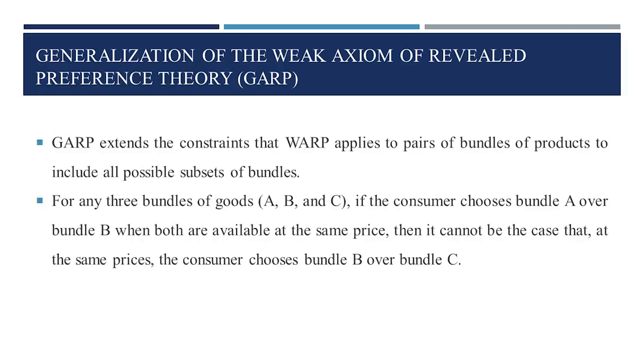There is one more axiom, that is GARP — the Generalised Axiom of Revealed Preference, which is a generalisation of the Weak Axiom of Revealed Preference. GARP extends the constraint that WARP applies to pairs of bundles to include all possible subsets of bundles.